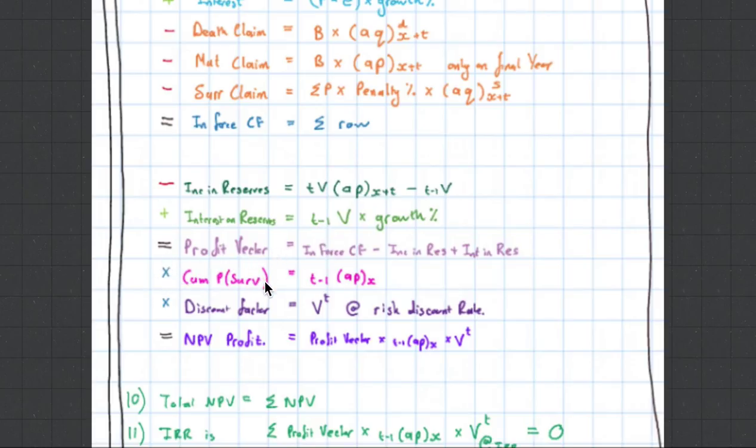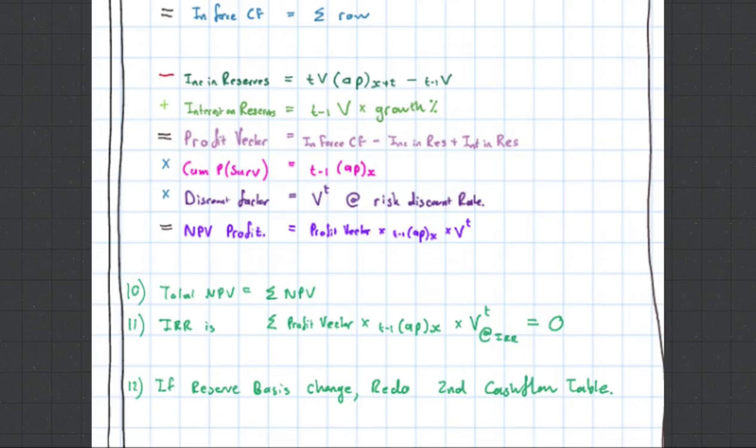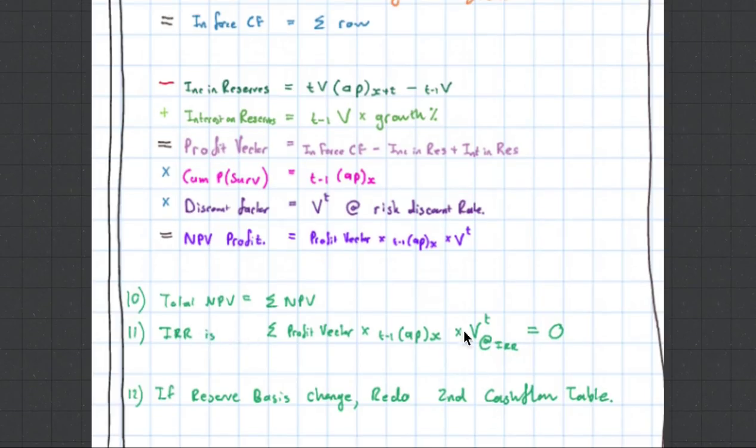You're going to multiply it by the cumulative probability of survival. Multiply that by the discount factor. That's going to give you the present value of profit. Then you're going to just, like we did it last time, divide it and you can get your profit margin. Or you can use this formula here to calculate the internal rate of return. If the reserve basis change, you must redo this whole cash flow area here. Introducing reserves will normally decrease the net present value.